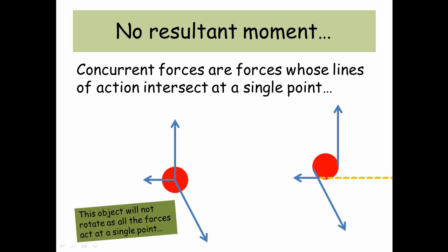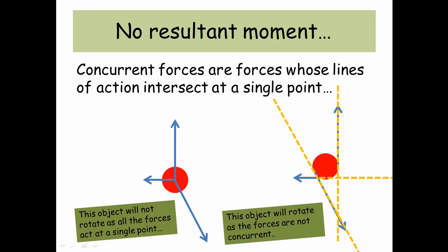However, the object on the right, if we just draw where our lines of action are going through, you can actually see that for the three vectors, the three forces, the lines of action do not meet up at a single point. Therefore, there will be some kind of rotation. So this object will rotate as the forces are not concurrent.